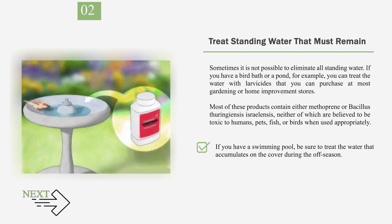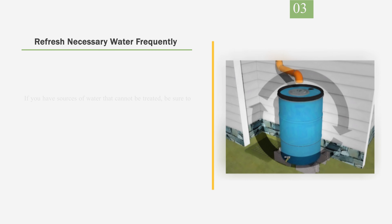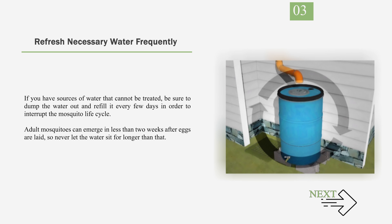If you have a swimming pool, be sure to treat the water that accumulates on the cover during the off-season. Number 3: Refresh necessary water frequently. If you have sources of water that cannot be treated, be sure to dump the water out and refill it every few days in order to interrupt the mosquito life cycle.